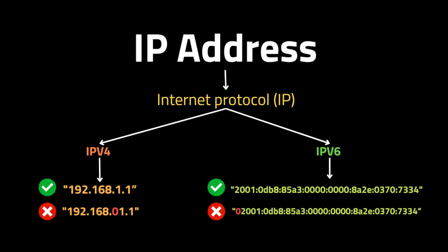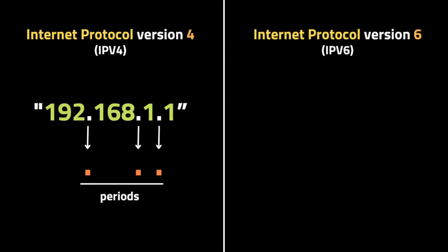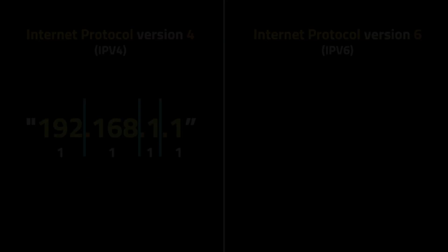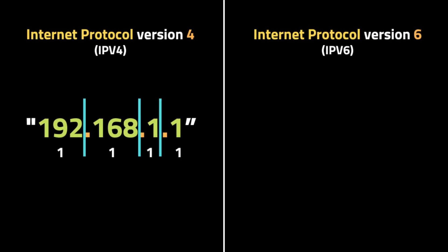To solve this problem we need to first understand the characteristics of IPv4 and IPv6. Starting with IPv4: the first characteristic is that it contains three periods, which are used to separate different sections of the IP address. Every IPv4 address has four sections, and those sections must follow specific conditions to be a valid IPv4 address.